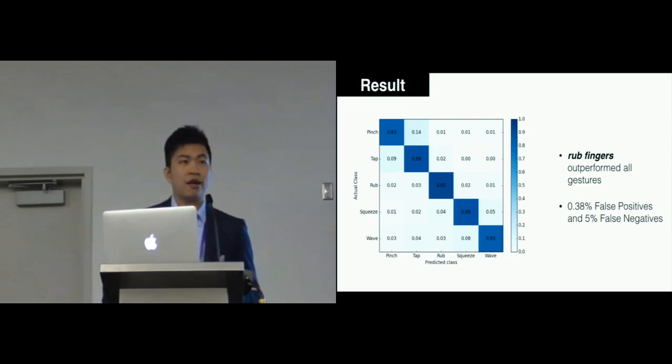This is the confusion matrix of the accuracy of the gestures shown in our experiment. We found that the rub finger outperforms all the other gestures as it's very distinct in the frequency to perform this gesture. Pinch and tap were confused with each other most often because the movement involved in these two gestures are relatively similar.